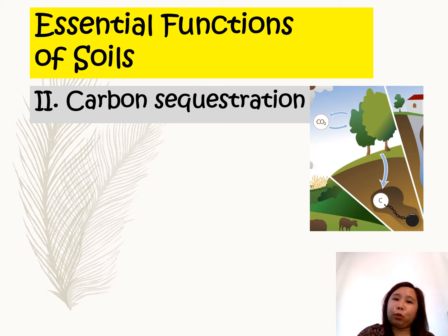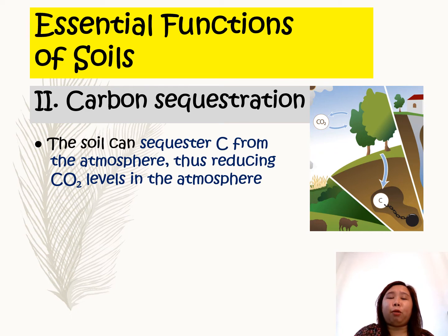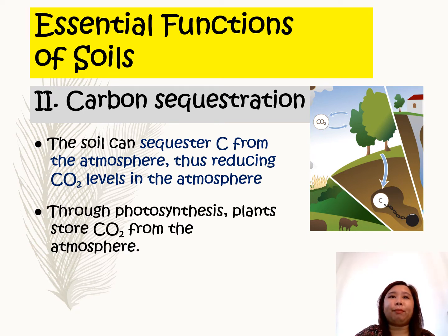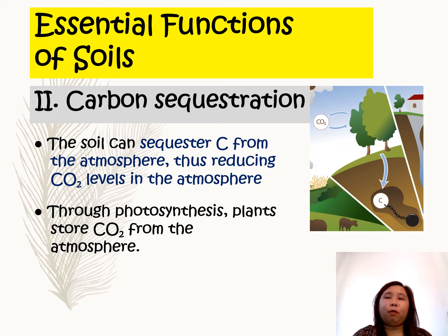Another function of the soil is for carbon sequestration. The soil can sequester carbon from the atmosphere, thus reducing the carbon dioxide levels in the atmosphere. How does this happen? During the process of photosynthesis, where plants produce their own food, plants store carbon dioxide from the atmosphere.